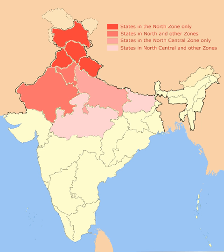Camel or jeep safaris of the Thar Desert are also popular in the state of Rajasthan. North India includes several national parks such as the Nanda Devi Biosphere Reserve, Jim Corbett National Park, Keoladeo National Park and Ranthambore National Park.